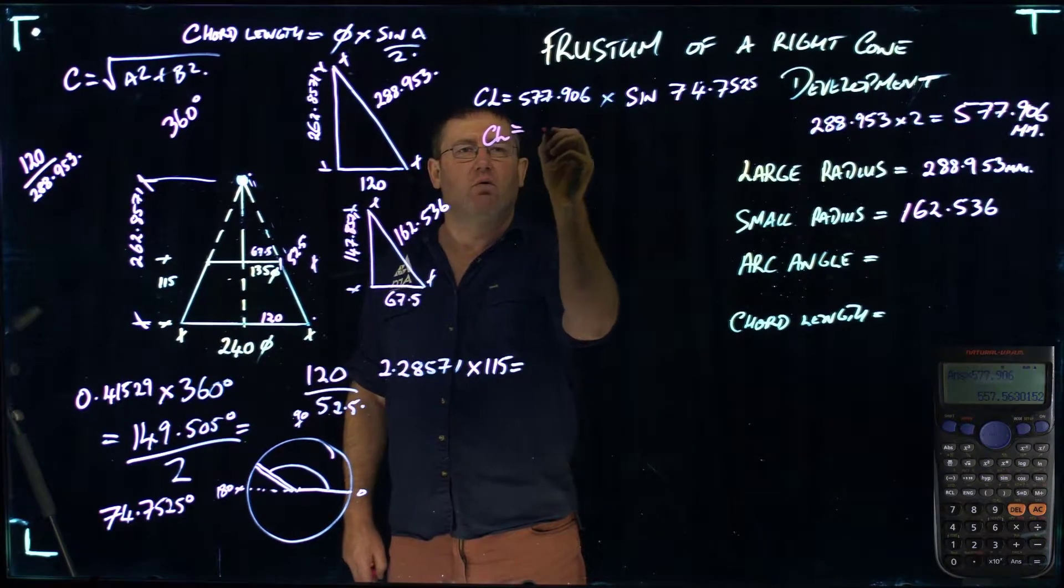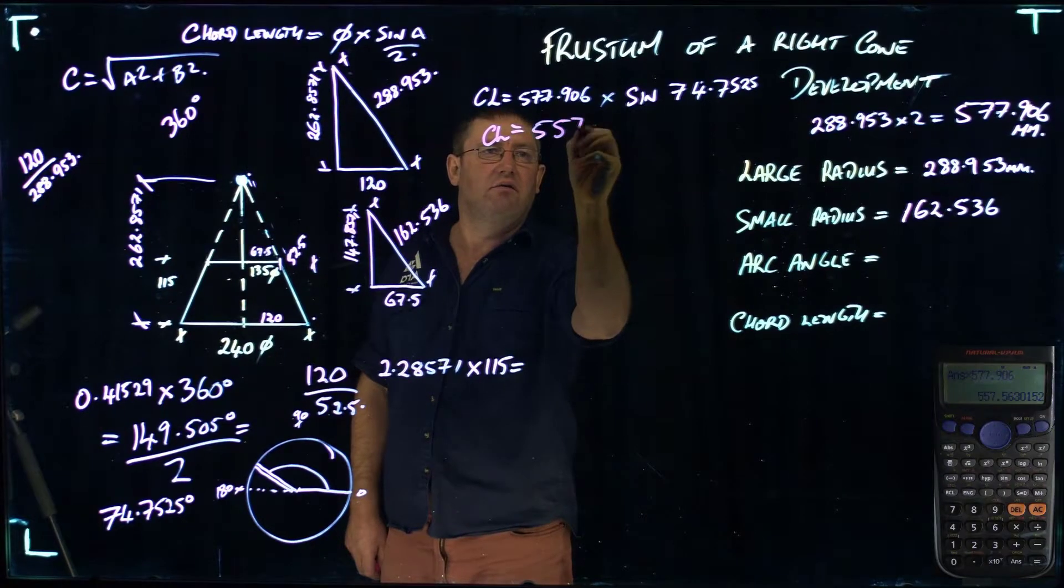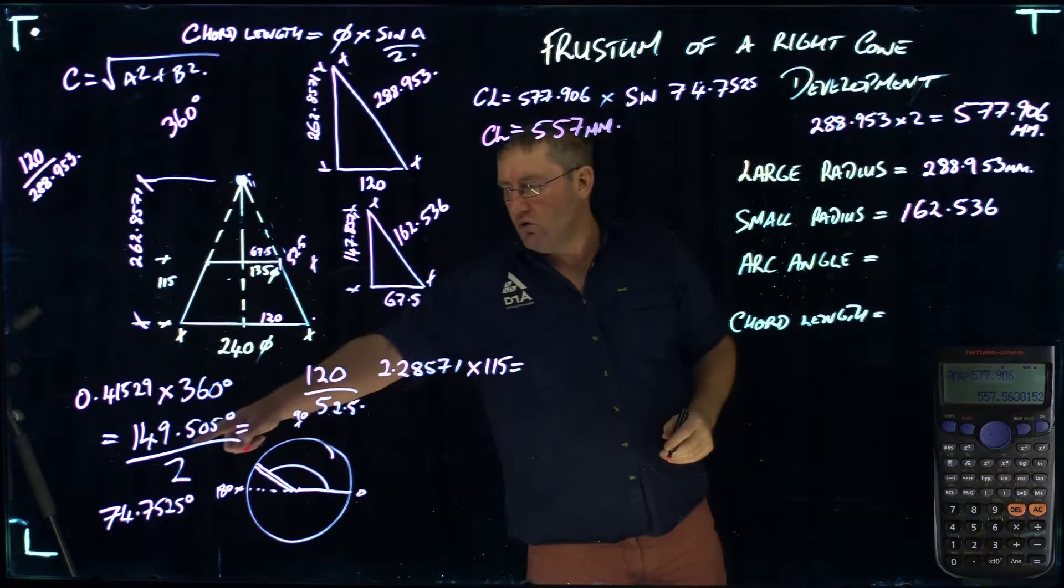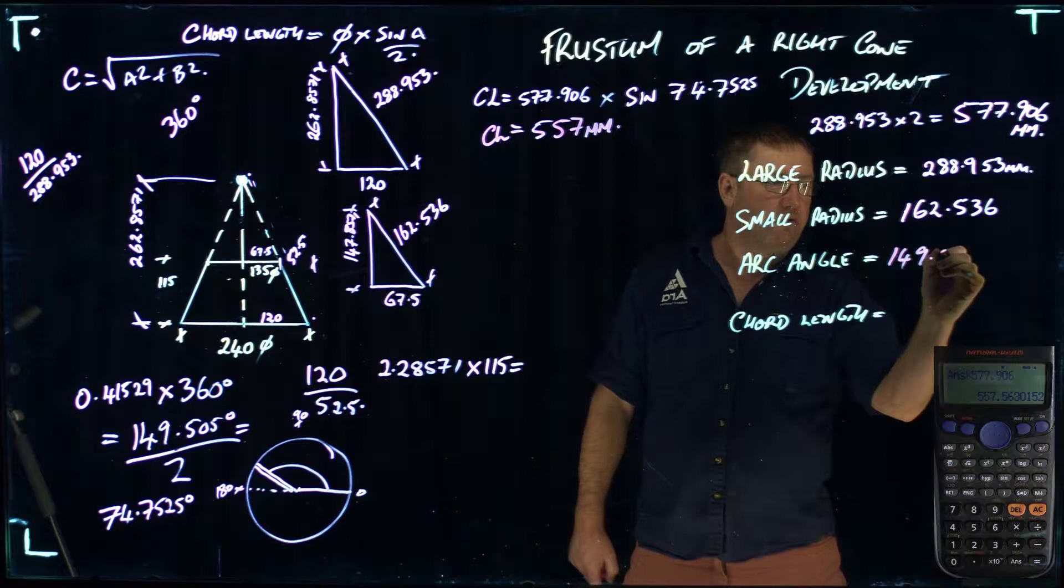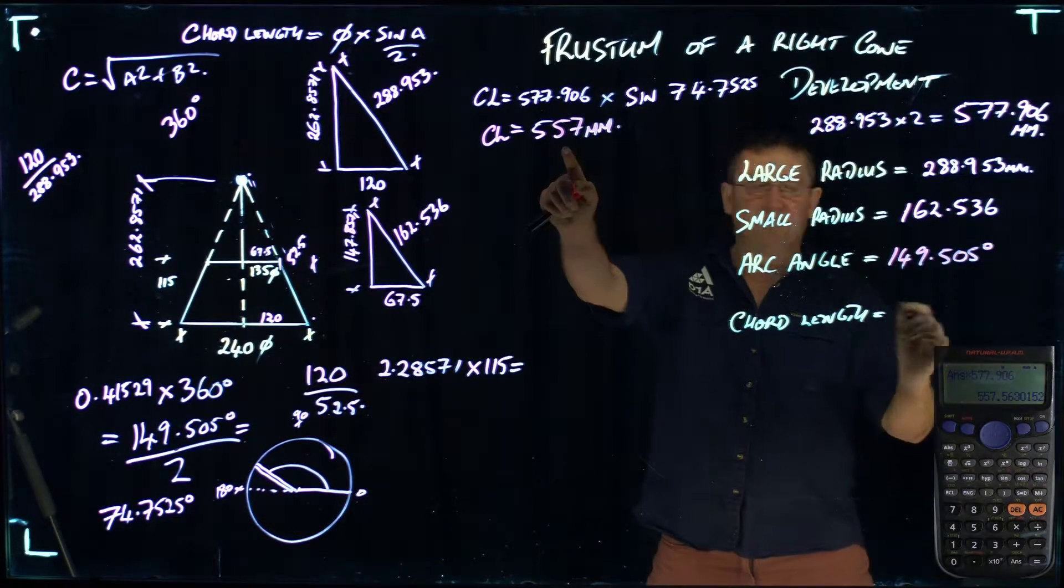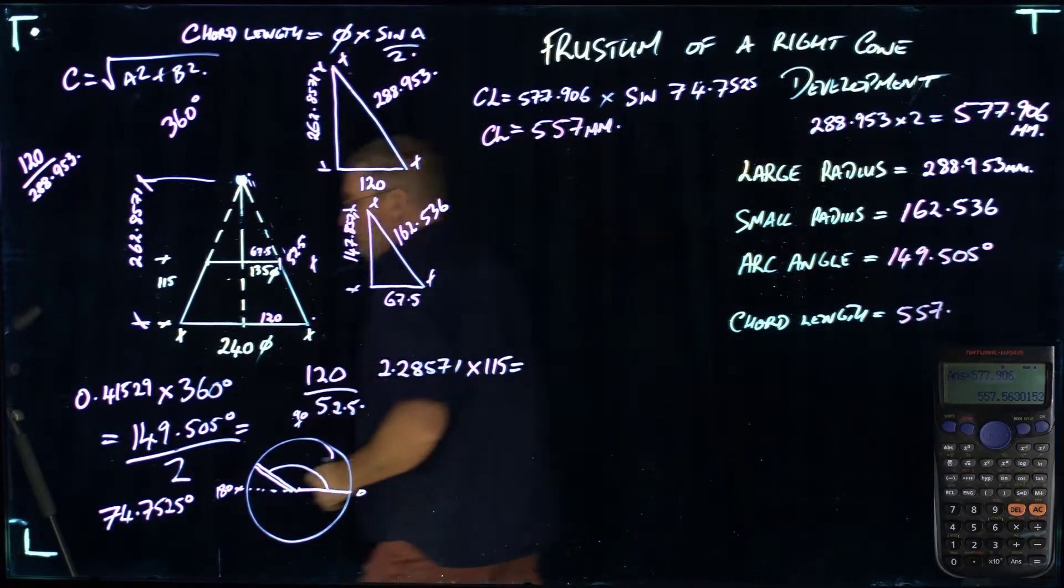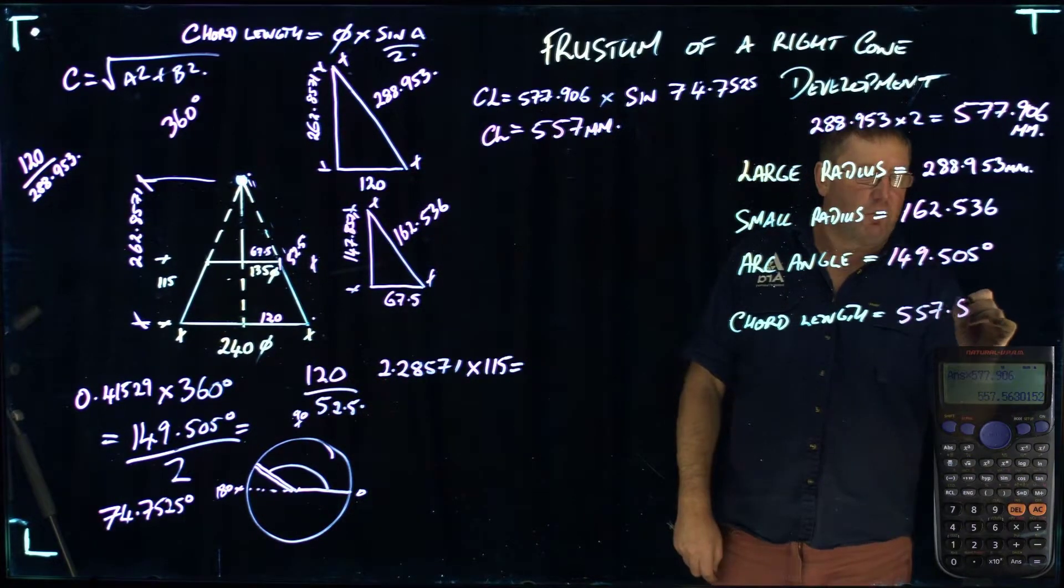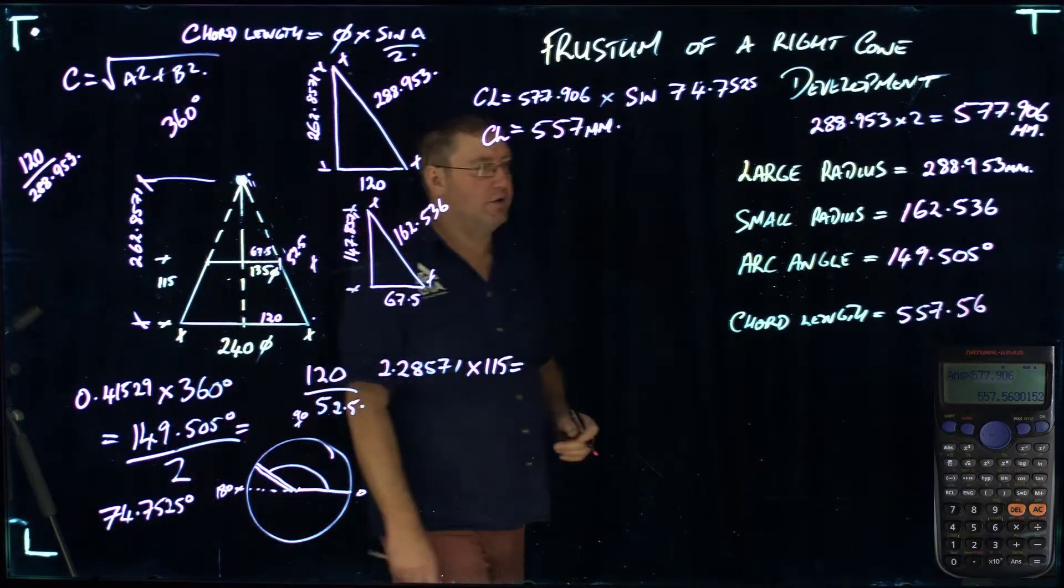The chord length equals 557 millimeters. So my arc angle is 149.505 degrees. My chord length is 557.56. It has many numbers after it, as you can see on the calculator, but we'll ignore those. Even when you're developing it on a sheet of metal, you're actually only going to round it up to 558 millimeters.